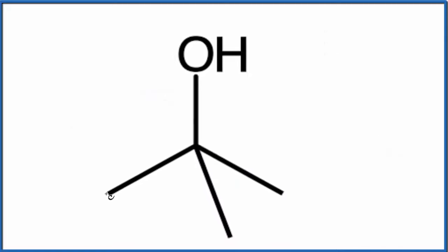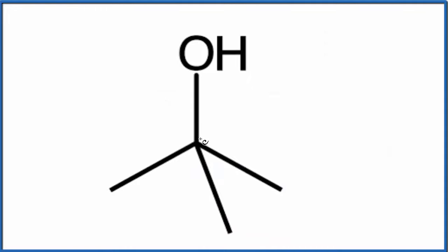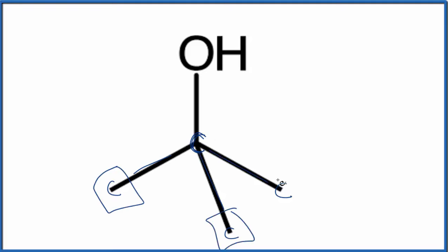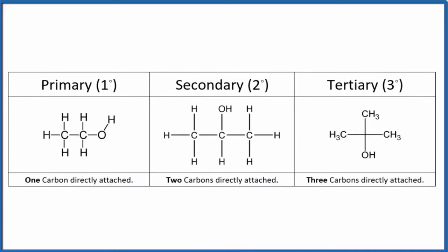Last one. When you have something like this, we know there's a carbon here, and there would be carbons at the end as well. The carbon bonded to the OH group has one, two, three carbons attached directly to it — that's a tertiary alcohol. This is Dr. B looking at how to identify primary, secondary, and tertiary alcohols. Thanks for watching.